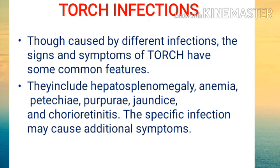TORCH infections are caused by different organisms, but they share some common features. The common symptoms of congenital TORCH infections — if a mother had an infection during pregnancy, it will adversely affect the newborn. The newborn will have hepatosplenomegaly, anemia, petechiae, purpura, jaundice, and chorioretinitis.